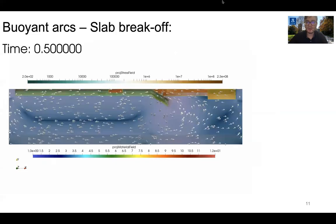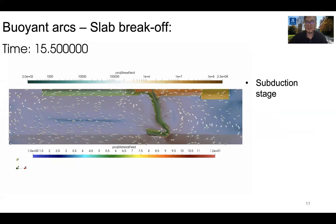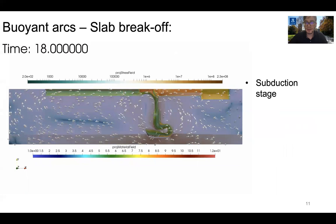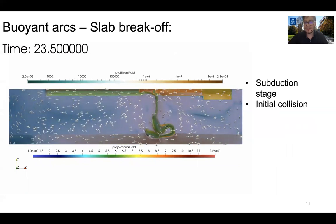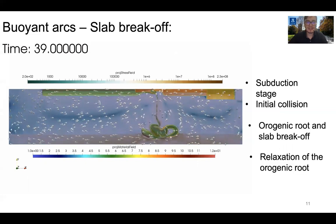In the evolution of buoyant arcs, similarly, the onset of slab anchoring results in a return flow and collision results in the formation of an orogenic root. However, differently from dense arcs, in buoyant arcs we have the break of the subducting slab, which triggers the springback of the orogenic root and the retreat of both the subducting and overriding plates from the collisional zone.